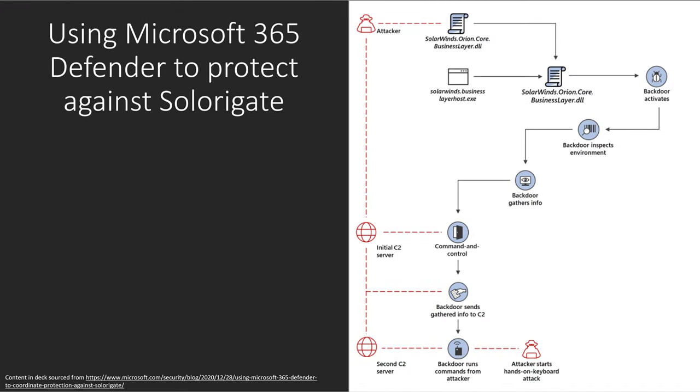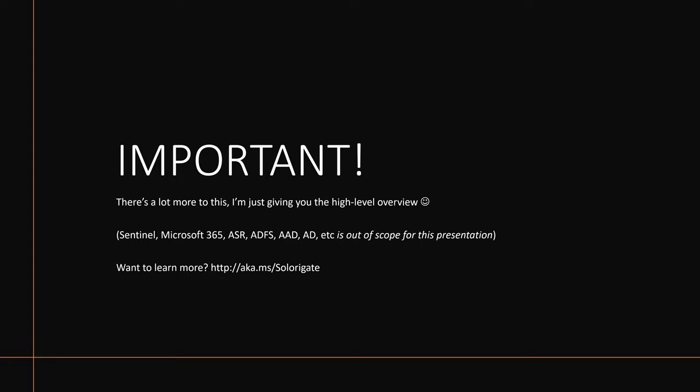I'll provide a link to download this presentation in the video description — everything in that blog article I've taken and dumped into this presentation to make it easier to tell the story. Quick disclaimer: there's a lot to this, more than I have time to show in this video. I'm going to give you a high level. I'm not going to jump into Sentinel, deeper Microsoft 365, attack surface reduction, ADFS, Azure Active Directory, on-prem Active Directory — that's out of scope. Over time I'll publish additional videos on those. Microsoft has published a lot of resources at aka.ms/SolarGate to learn more.